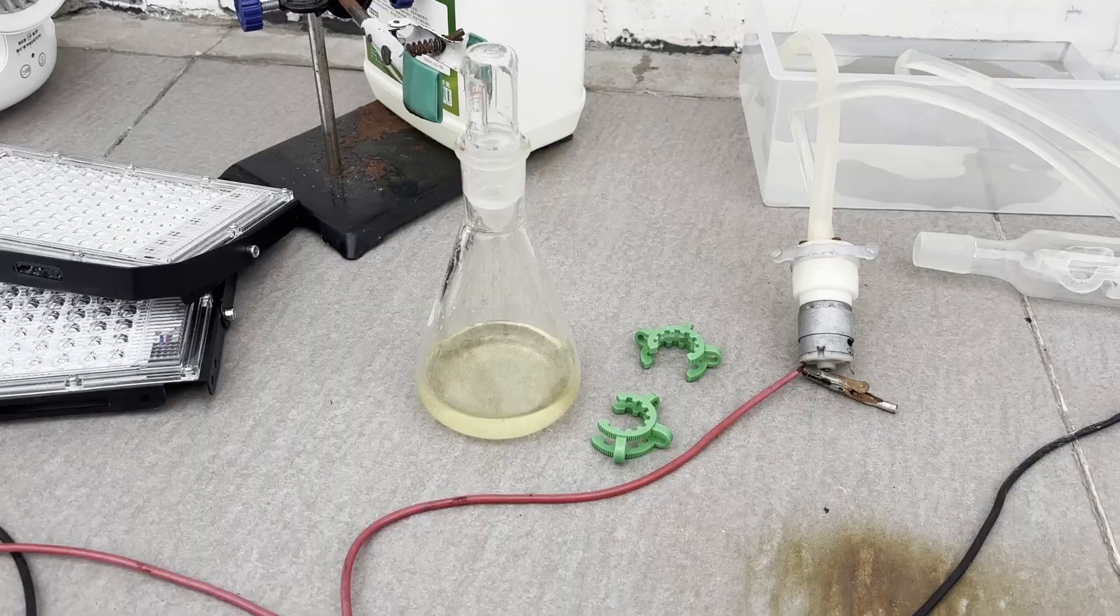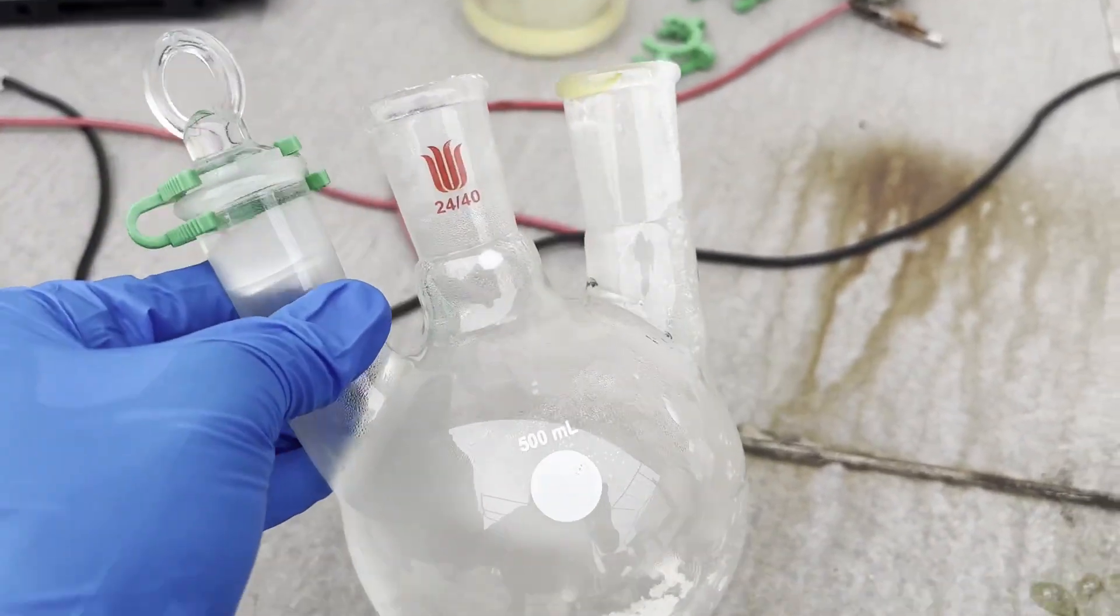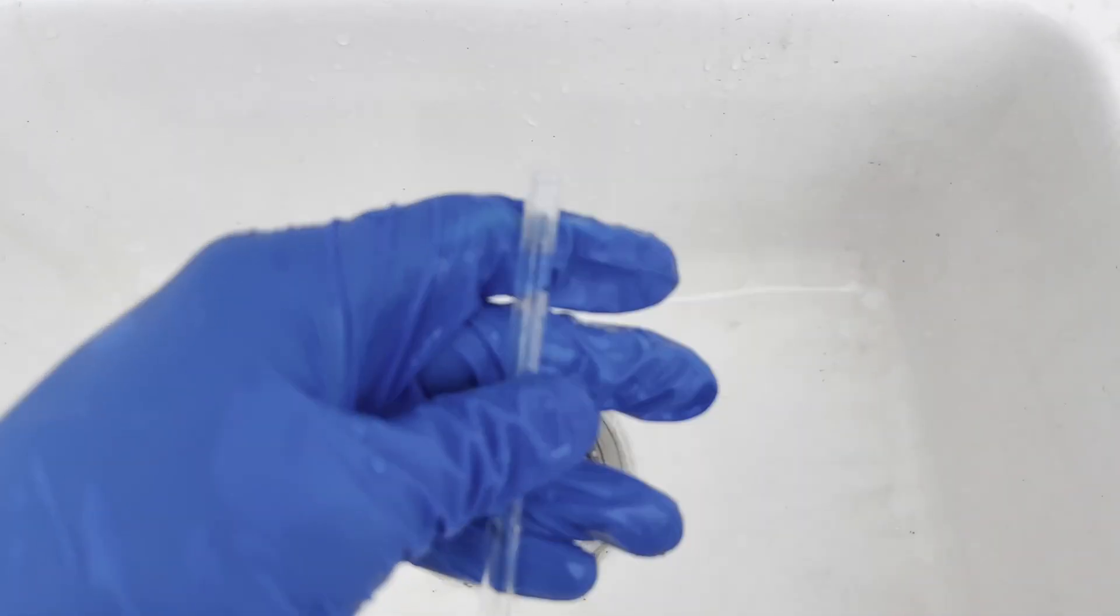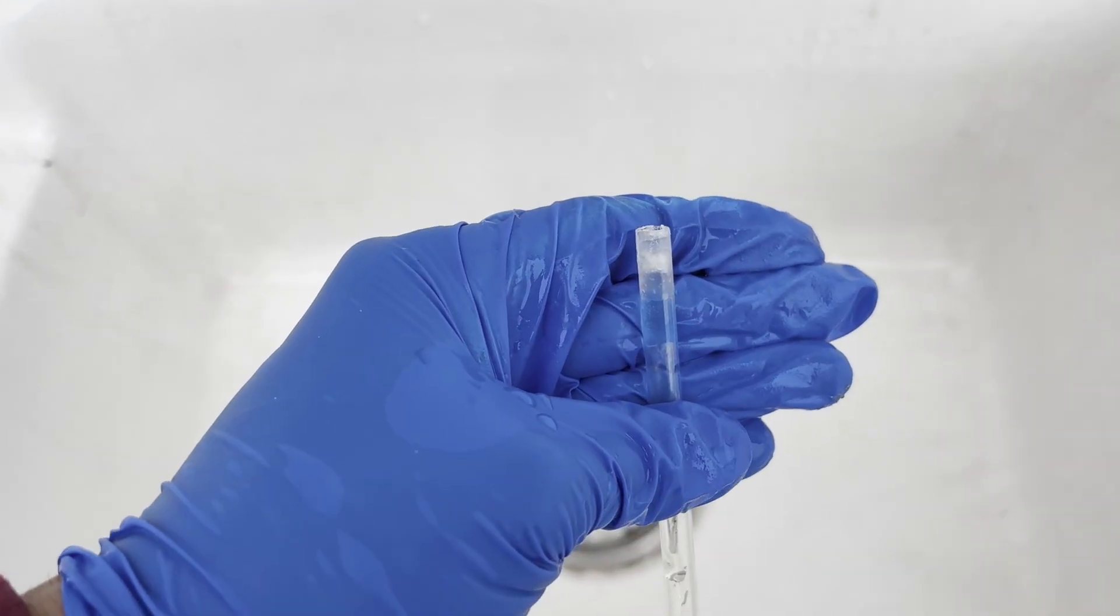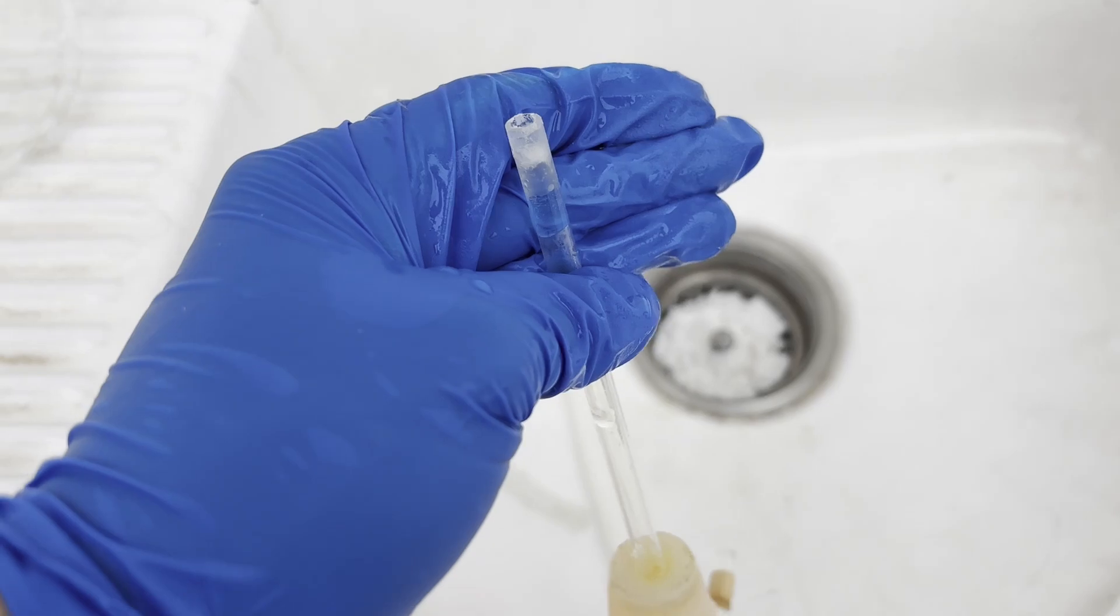Anyways, if the flask is inspected closely, crystals of triphosgene can be seen on the walls of the flask, at the bottom, and even inside the gas inlet tube. This shows that 50ml of carbon tetrachloride is the bare minimum amount of solvent, as smaller amounts of solvent will result in triphosgene crystallizing out and blocking the gas inlet tube.